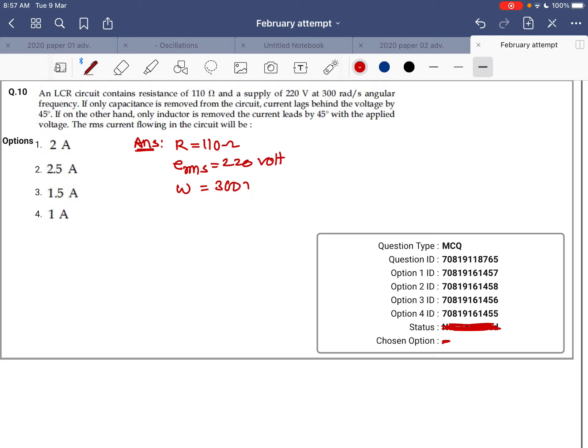The frequency of the supply is 300 radians per second. If capacitance is removed, the current lags behind the voltage by 45 degrees. If on the other hand, only the inductor is removed, the current leads by 45 degrees.